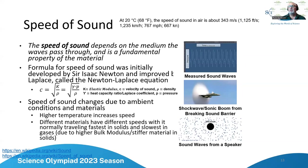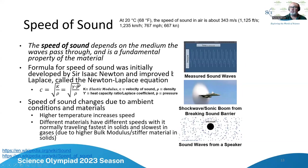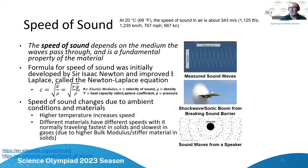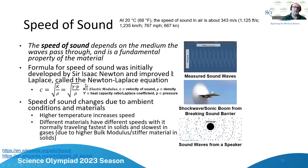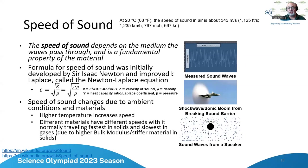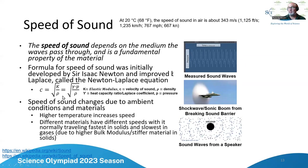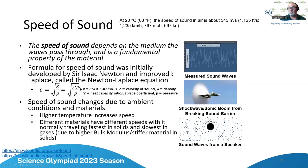The formula for speed of sound was developed by Sir Isaac Newton and improved by Laplace — called the Newton-Laplace equation — where c (speed of sound) equals the square root of the elastic modulus divided by the pressure, or equivalently the square root of the Laplace coefficient (heat capacity ratio) times pressure divided by density. You should have this formula and also be able to solve for density, elastic modulus, heat capacity ratio, and pressure.